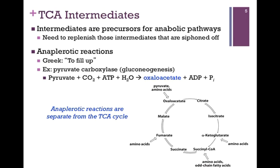If we use the intermediates of the pathway as precursors for anabolic pathways, then we're siphoning off those intermediates. And if we don't replenish them, the pathway will shut down. So we need side reactions to replenish those intermediates. These are referred to as anaplerotic reactions. The Greek literally means to fill up. You can consider each of these steps in the pathway as containing a bucket that will fill up with the intermediate. If we keep pouring out the buckets for other side reactions — catabolic and anabolic — then we're going to need to fill the bucket back up if we want to keep this TCA cycle going.